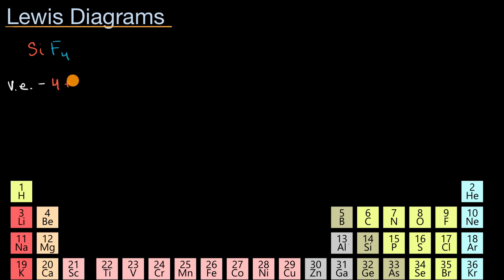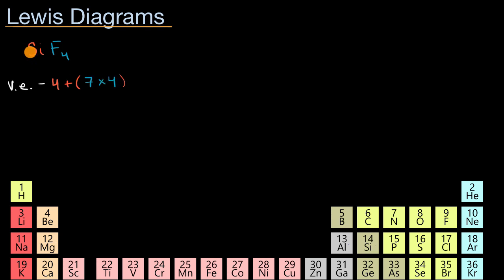To that, we're going to add the valence electrons from the four fluorines. A free neutral fluorine atom's outer shell is the second shell, and in that outer shell it has seven electrons. So each of these fluorines has seven valence electrons, and there are four of them.